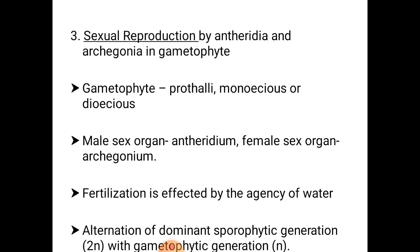The sex organs are multicellular. The antheridium is the male sex organ, globular in structure. The male gametes produced from the antheridium are called spermatozoids or antherozoids, and they are motile by means of flagella. The archegonium is the female sex organ, flask-shaped in structure, consisting of a narrow neck and a swollen venter.